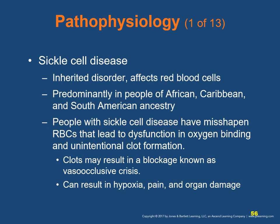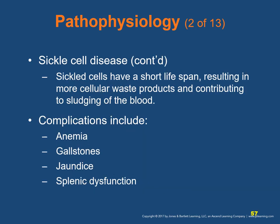Sickle cell disease, also called hemoglobin S disease, is an inherited blood disorder that affects red blood cells. It is found predominantly in people of African, Caribbean, and South American ancestry, and is present but less common in Mediterranean and Middle Eastern people. All newborns in the United States are tested for sickle cell disease. People with sickle cell disease have misshapen RBCs that lead to dysfunction in oxygen binding and unintentional clot formation. Clots may result in a blockage known as a vasocclusive crisis, which can cause hypoxia, substantial pain, and organ damage. Sickled cells have a short lifespan, contributing to sludging or clumping of the blood.